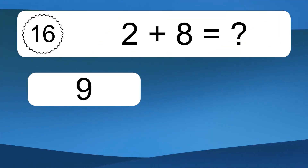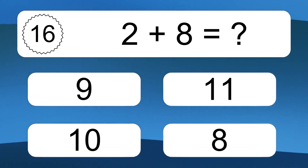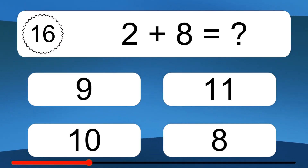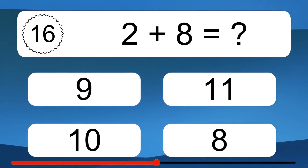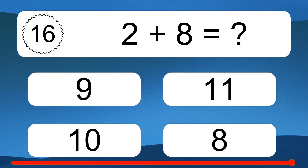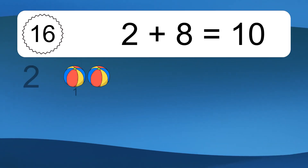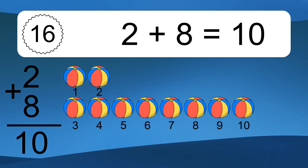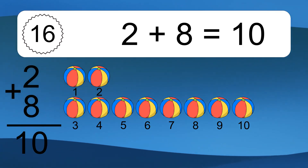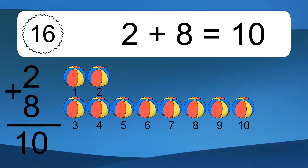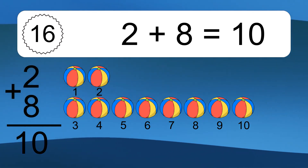2 plus 8 equals what? 2 plus 8 equals 10. Let's count it: 1, 2, 3, 4, 5, 6, 7, 8, 9, 10.